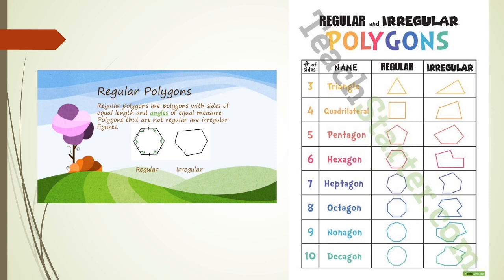In polygons, we have regular polygons and irregular polygons. Regular polygons are polygons with sides of equal length and angles of equal measure. If all the sides are of equal length and all the angles are of equal measure, we call those polygons regular polygons; otherwise, we call them irregular polygons.